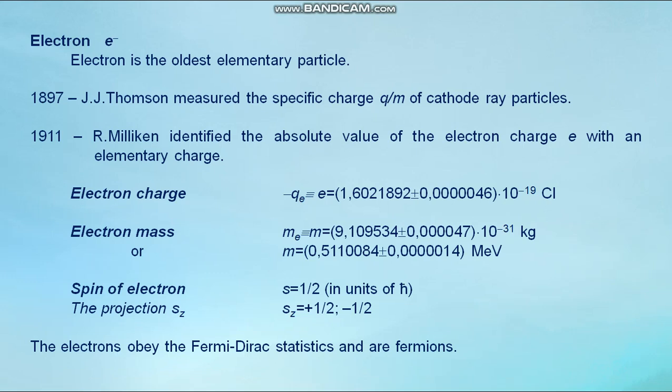Electron is the oldest elementary particle. 1897, J.J. Thomson measured the specific charge Q/M of the cathode ray particles. 1911, Millikan identified the absolute value of the electron charge e with an elementary charge. Electron charge minus Qₑ equals 1.6×10⁻¹⁹ Coulomb. Electron mass Mₑ equals 9.1×10⁻³¹ kilogram or M equals 0.51 mega electron volts. Spin of electron S equals one half in units of ℏ.